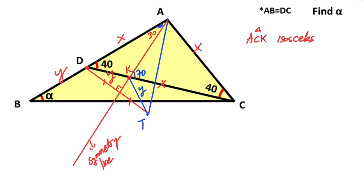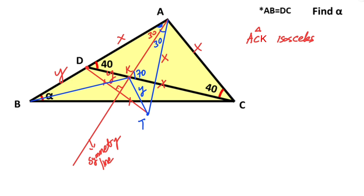If we connect K and T we get an equilateral triangle, because the base is divided into two equal parts and here is 90 degrees. If we connect A and T, this length is also x because of symmetry. If it is 30 degrees, then here must also equal 30 degrees. Triangle ADT has become an equilateral triangle. Now focus on triangle BDK.